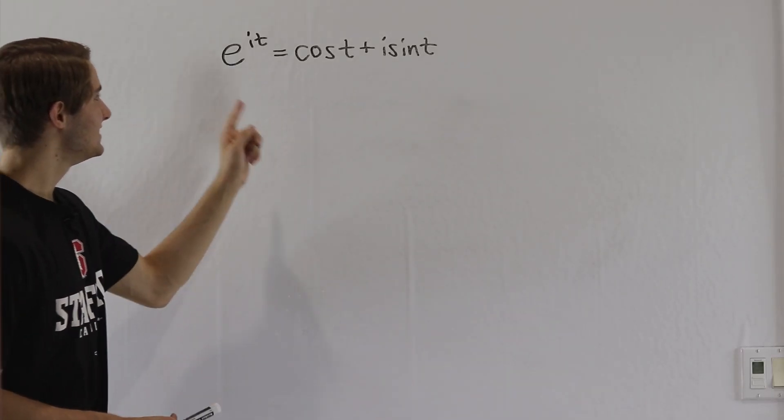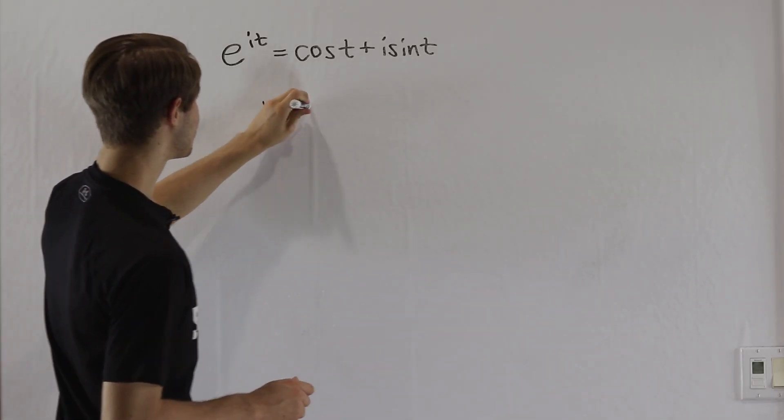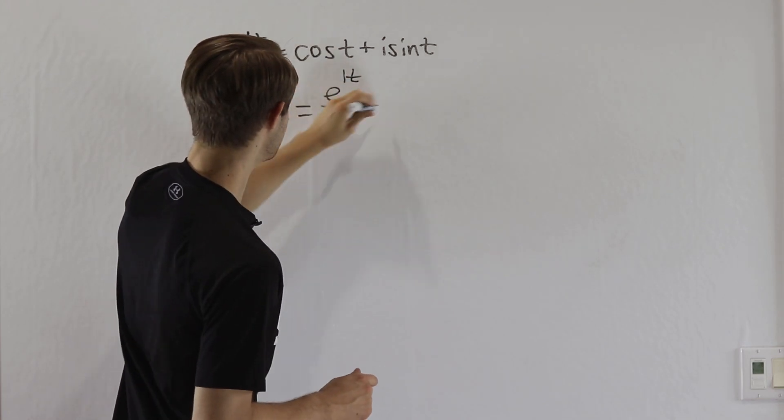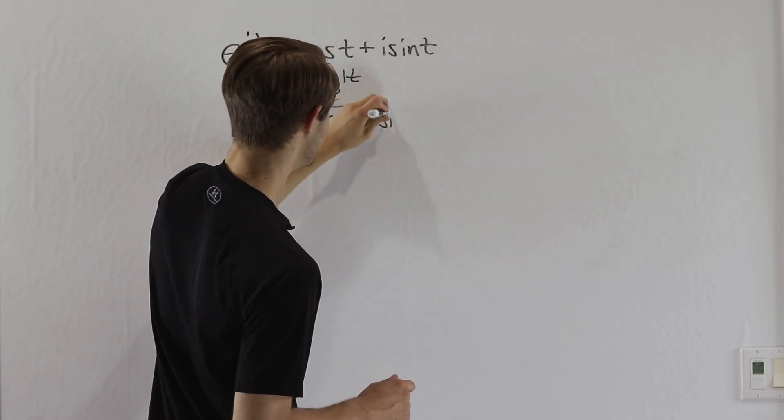We are going to prove that e to the it equals cosine t plus i sine t. To do that, let's consider the function e to the it over cosine t plus i sine t.